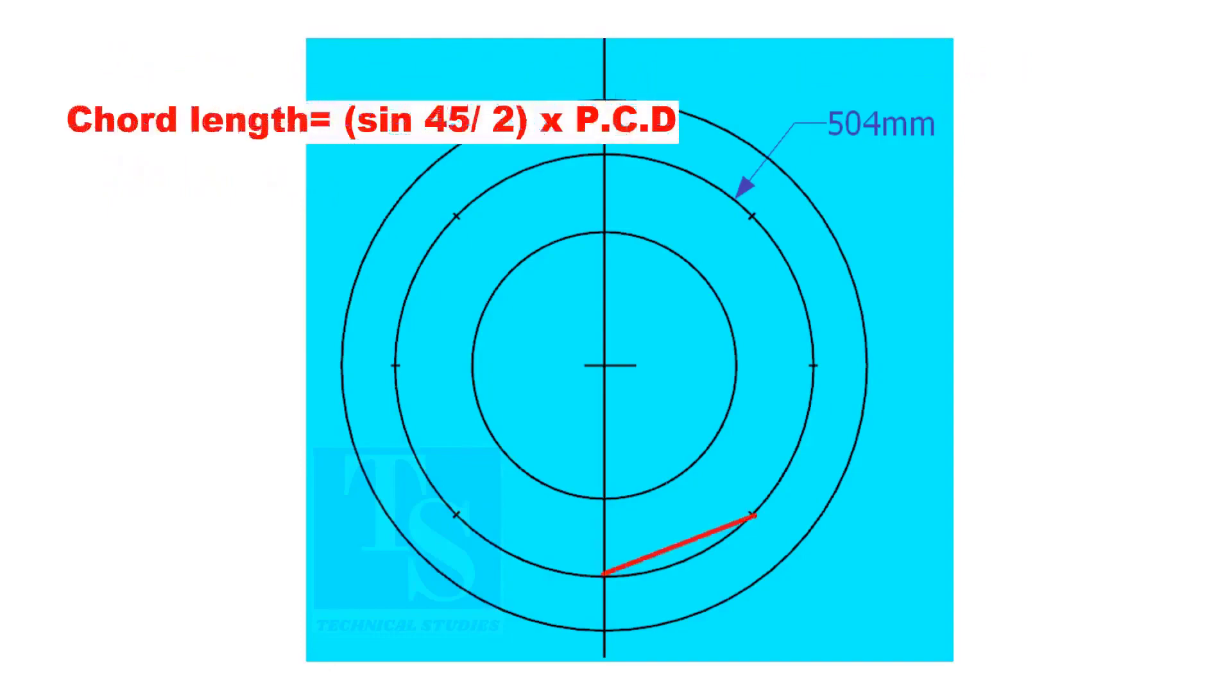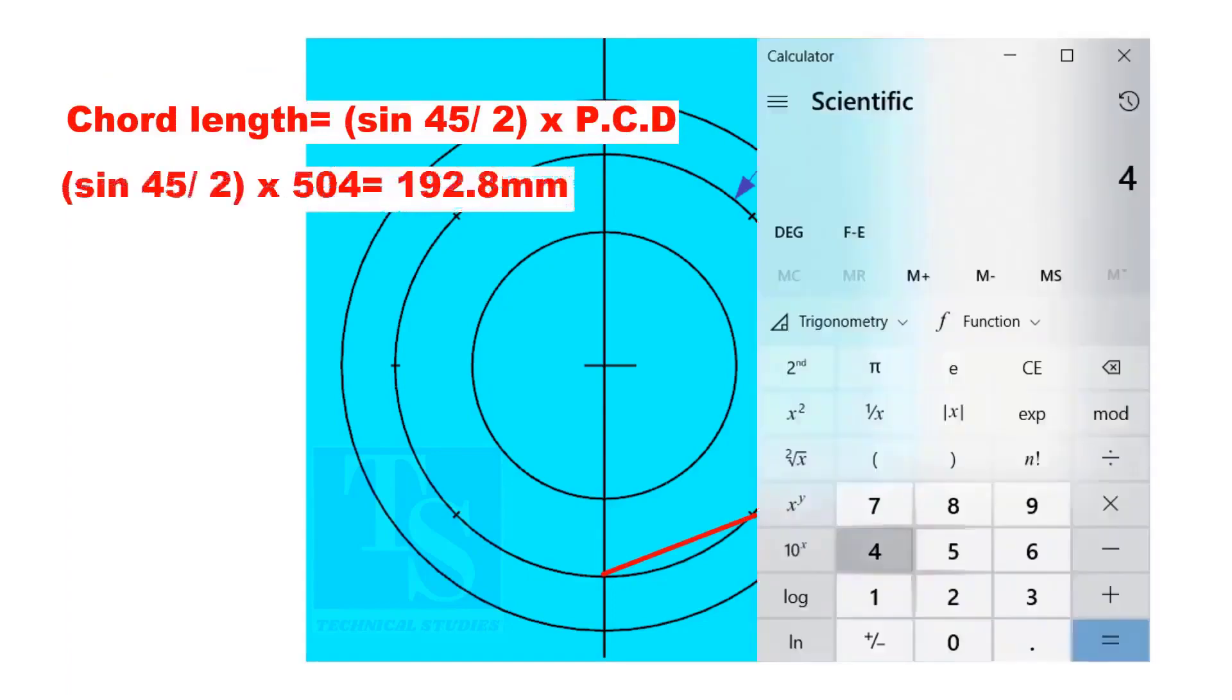Cord length equals sine 45 divided by 2 multiplied by PCD. The cord length is 192.8 millimeters.